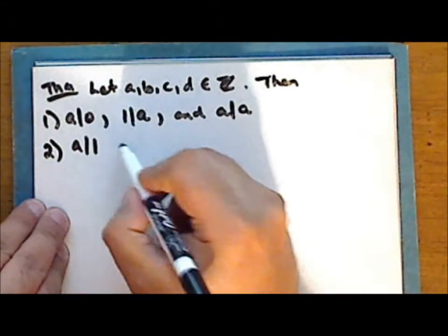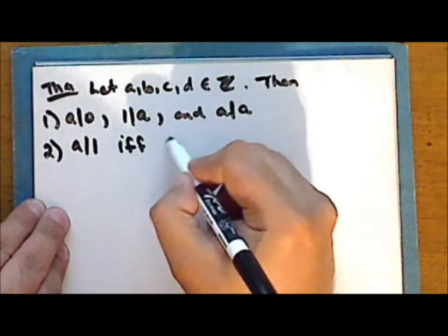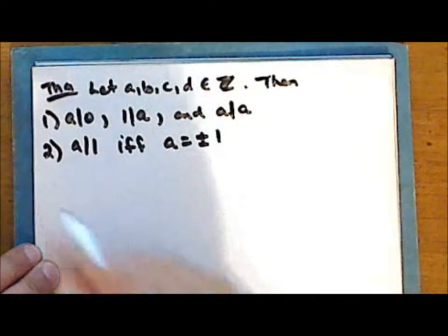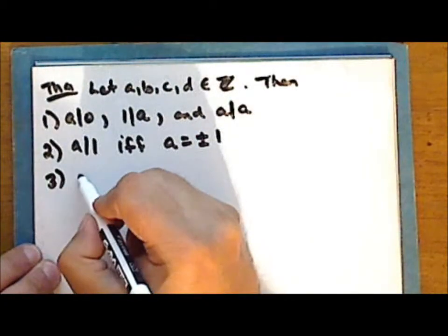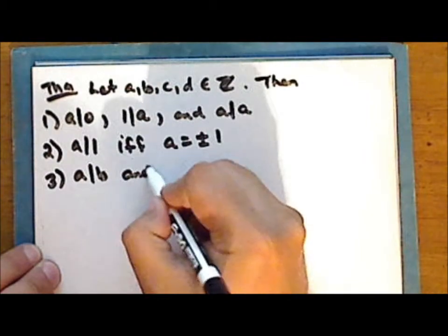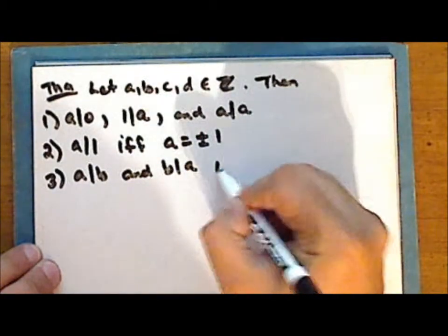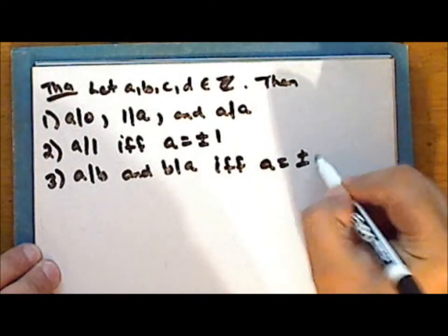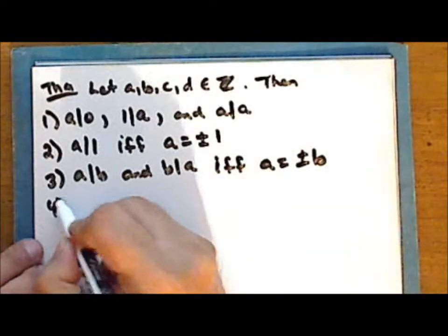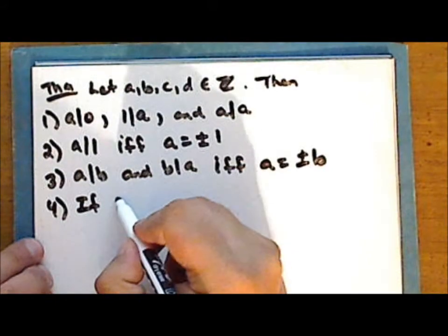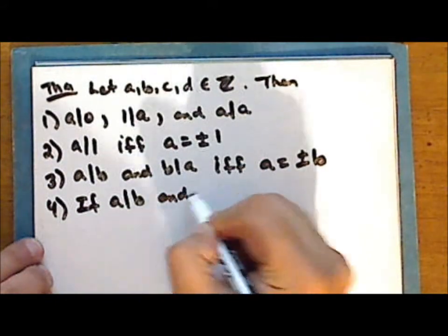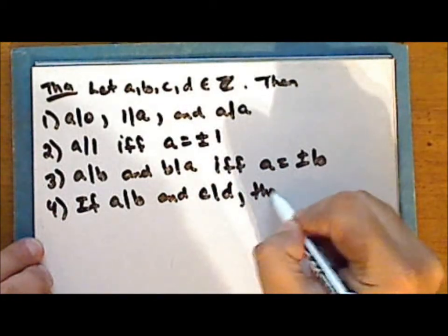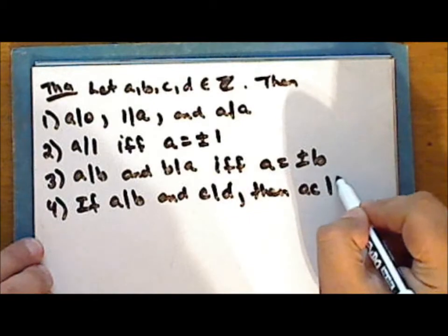Two: a divides one if and only if a is either one or negative one, so a is plus or minus one. Three: a divides b and b divides a if and only if a is plus or minus b. Four: if a divides b and c divides d, then the product ac divides the product bd.